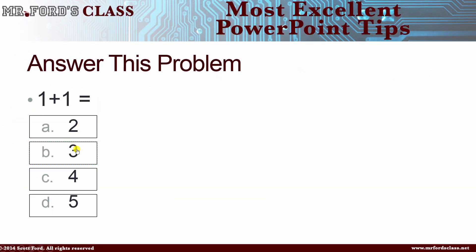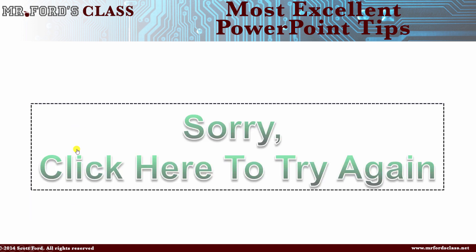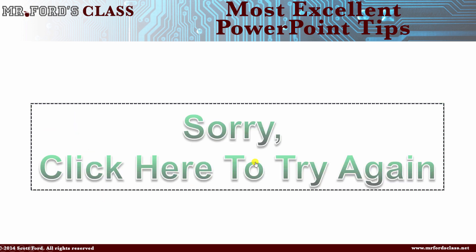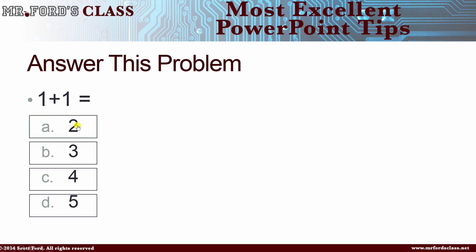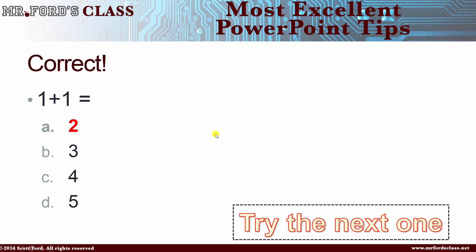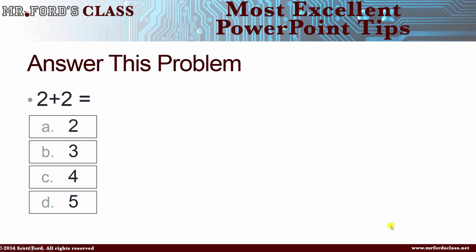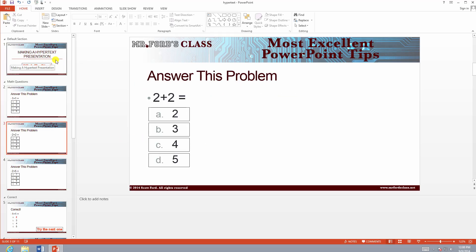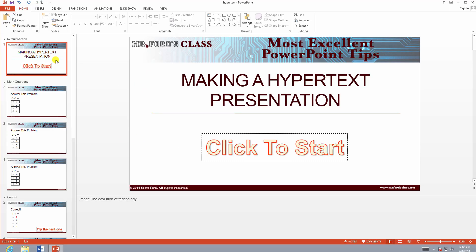1 plus 1 is what? It's 3. Oh no, I'm wrong. Click here to try again. It is 5. I'm wrong again. Let's try again. It's 2 — I got it right. Now I'm going to try the next question. 2 plus 2 is what? So you get an idea of what's going on — it's really a self-guided lesson.